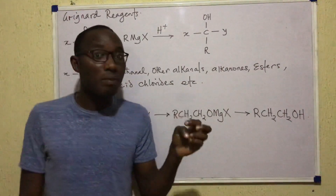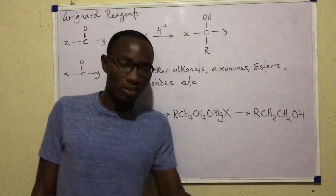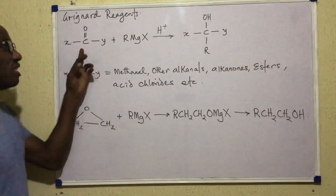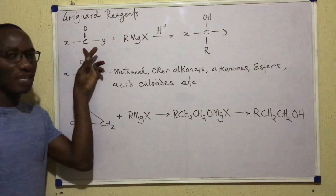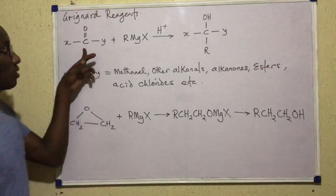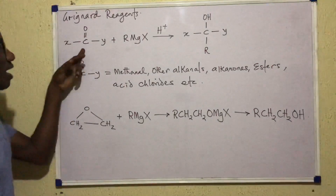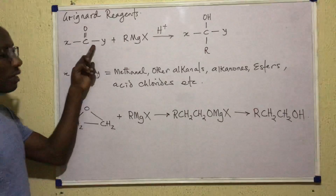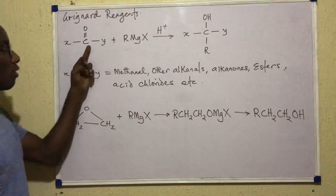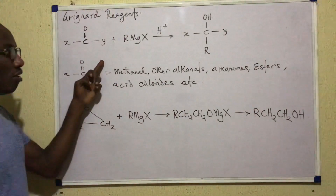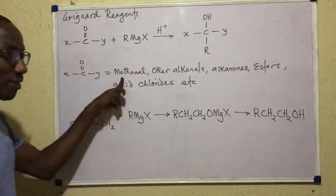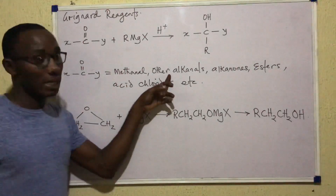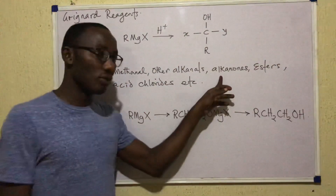Grignard reagents can prepare alcohols that could be primary, secondary, or tertiary. This depends on the nature of the second reagent, which I have represented here as X-C=O-Y. X-C=O-Y could be any of: methanal, other alkanals, alkanones, esters, or acid chlorides.